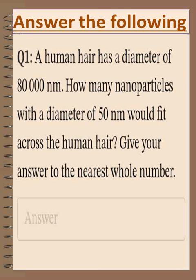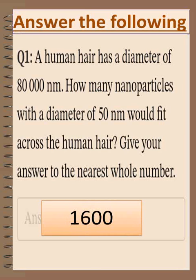We want to compare between two measurements here. The first one, human hair: 80,000 nanometers. And the other one, a nanoparticle of 50 nanometers. So the number we get from comparing is 80,000 ÷ 50 = 1,600 units. That is the answer.